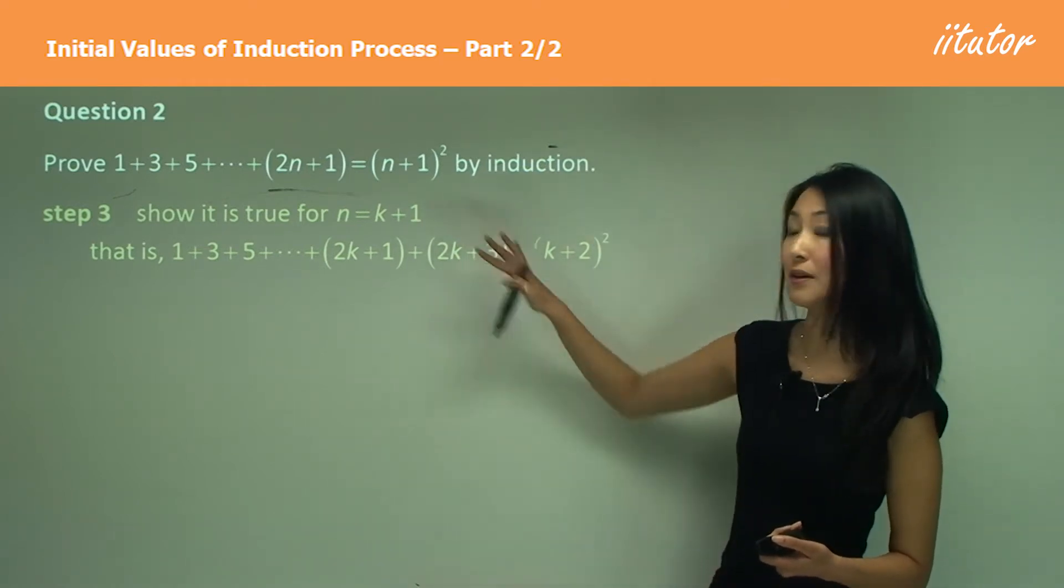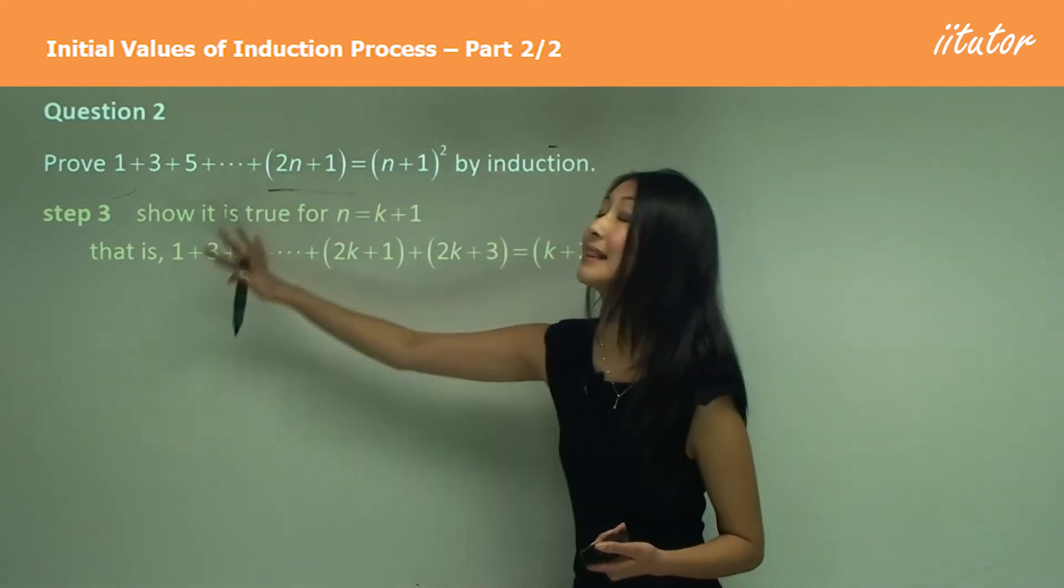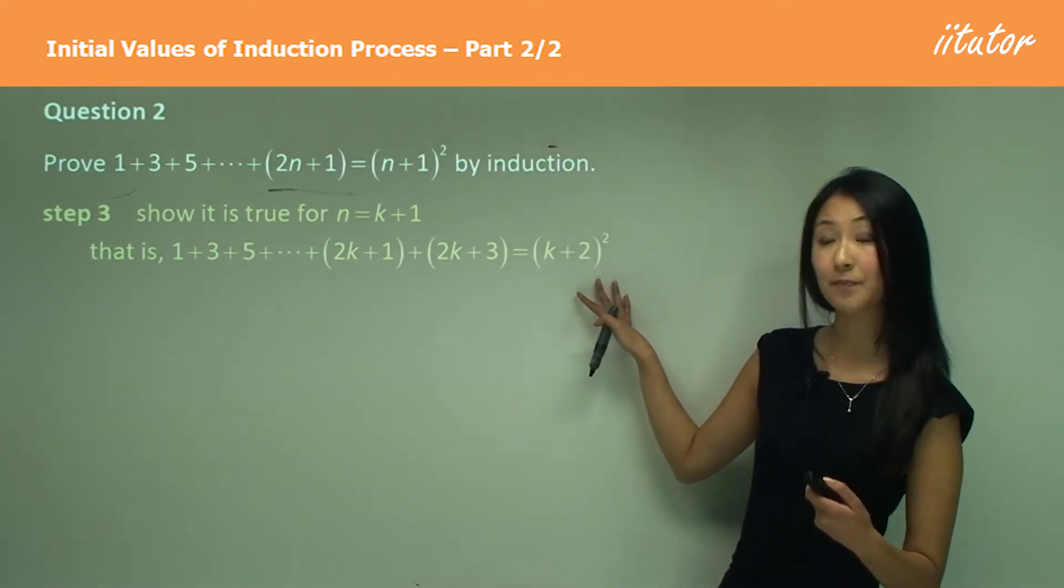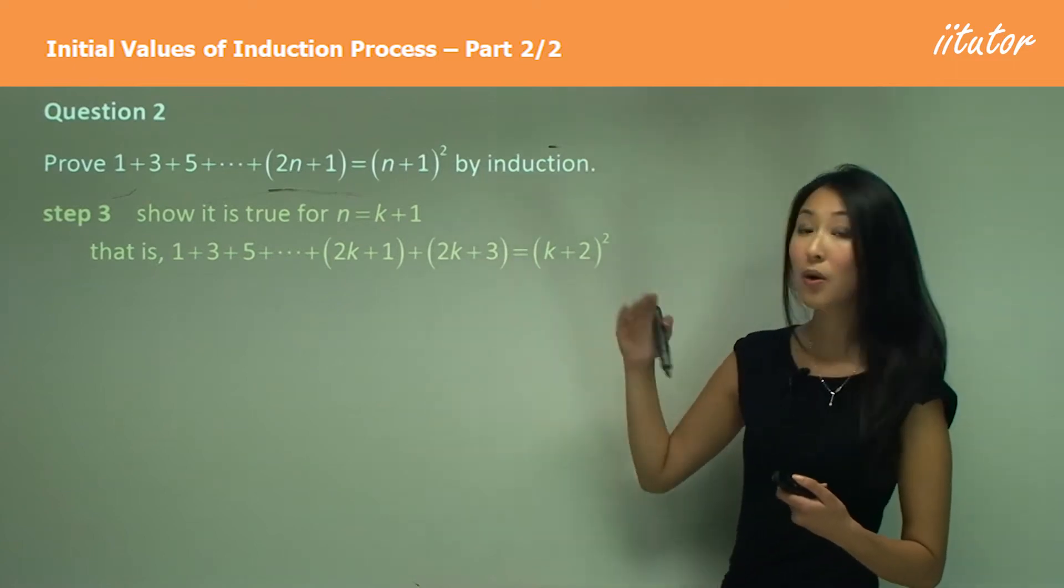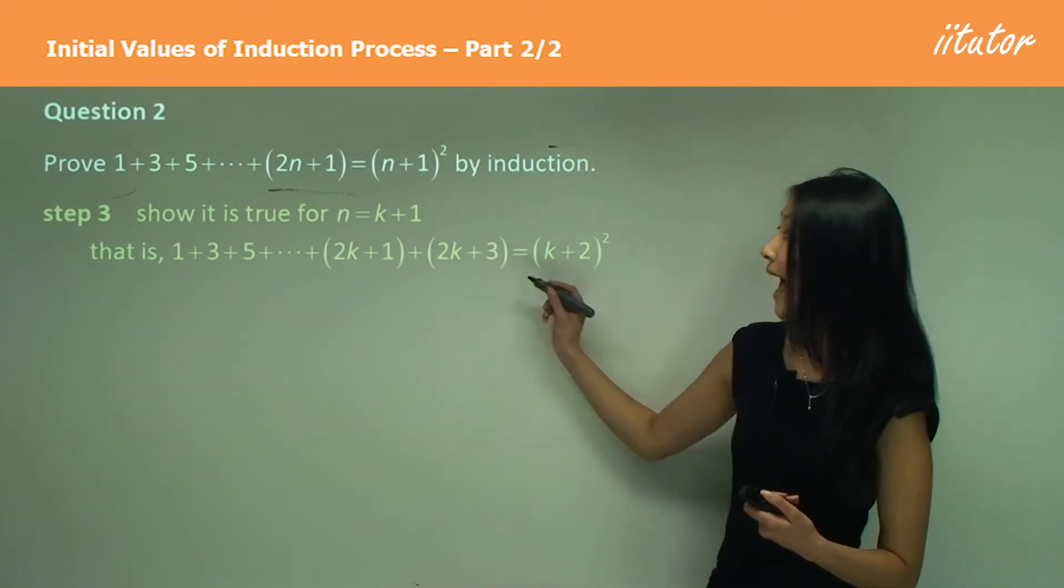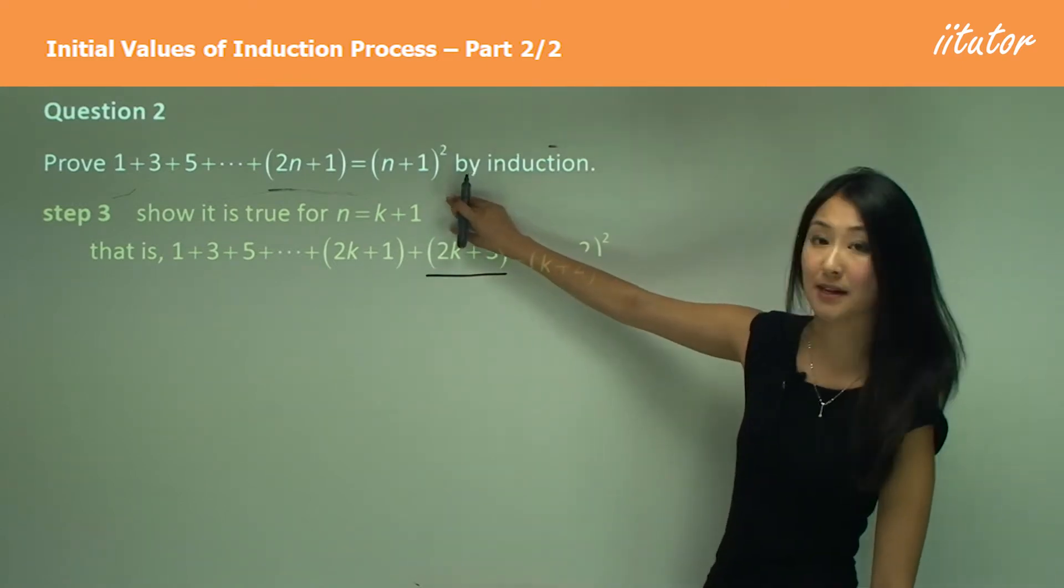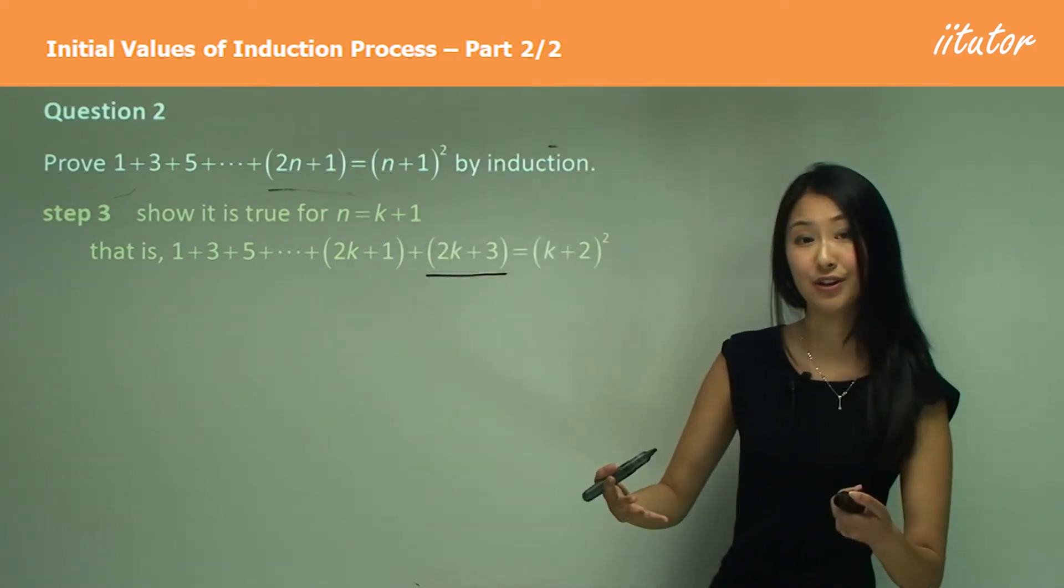Show it's true for n equals to k plus one by showing that this side equals to this side. How do we get this equation over here? The left hand side, what we do is we add an extra term, this term over here, because we're having k plus one. So that plus one is that extra term.